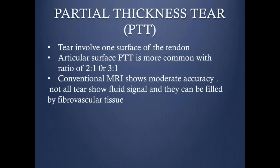Partial thickness tear involves one surface, either the bursal or the articular. The articular surface is more commonly involved, at a ratio of 2 to 1. Conventional arthrogram is still very good, but it is less sensitive for the articular surface partial thickness tear. This is where MRI arthrogram might be more superior, particularly for the articular surface partial thickness tear.